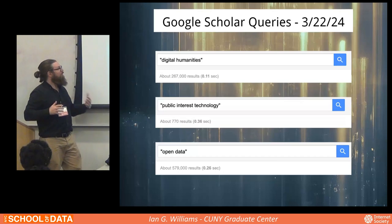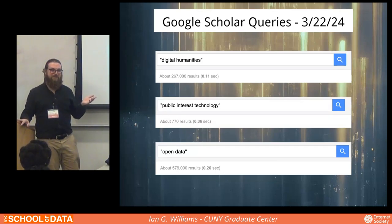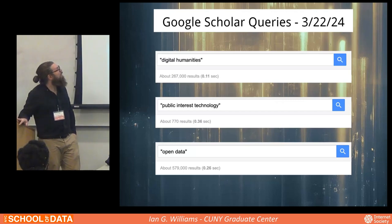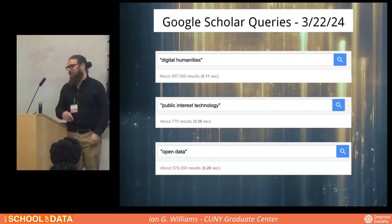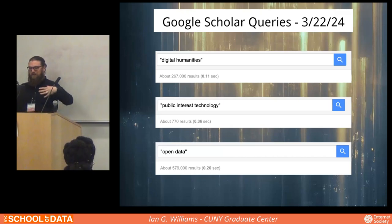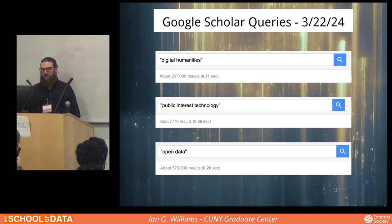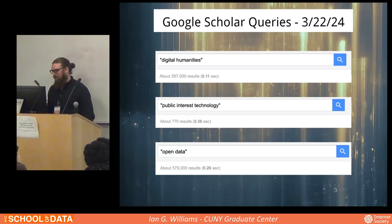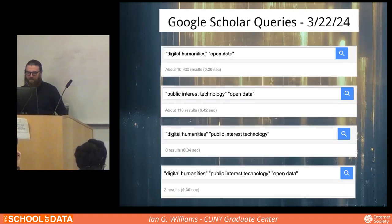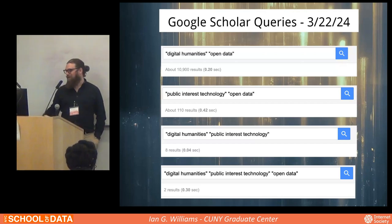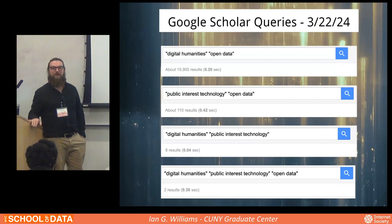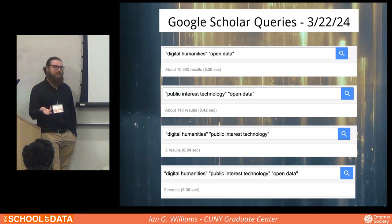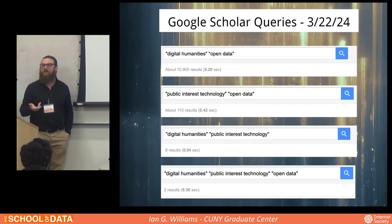Just in terms of the academic landscape — this is some very rudimentary data analysis I did looking on Google Scholar to see search results for these fields. Public interest technology is a relatively new term and field, so there are relatively few articles, but if you start combining queries and concepts it gets even more interesting — particularly the intersections of digital humanities and public interest technology, or digital humanities, public interest technology, and open data — but there are only two academic articles at that intersection. This seemed like a very interesting way of laying out the landscape.